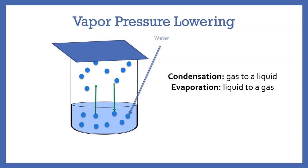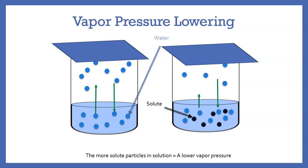Water will turn into a gas, then into a liquid, then into a gas, then into a liquid. Now let's say we add our solute to our water. When this happens, you get a lower vapor pressure. So the more solute particles in solution means a lower vapor pressure.